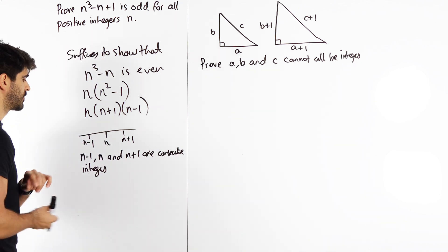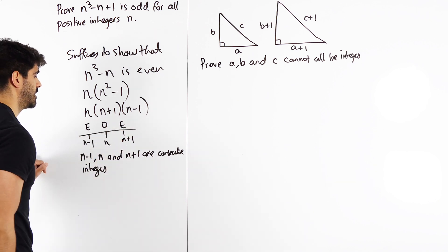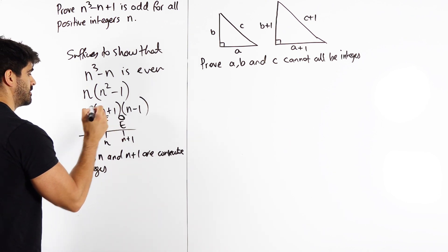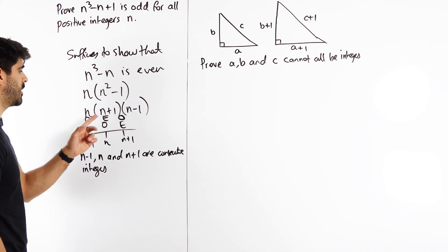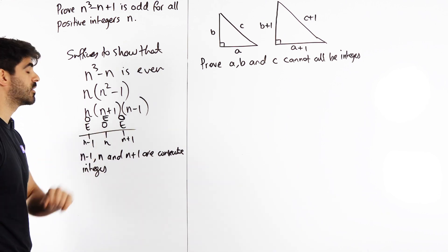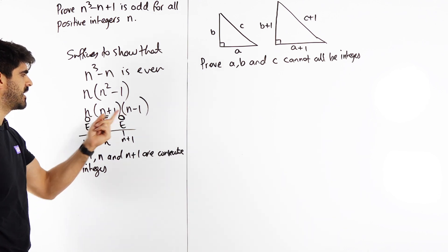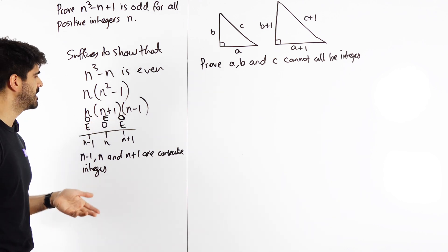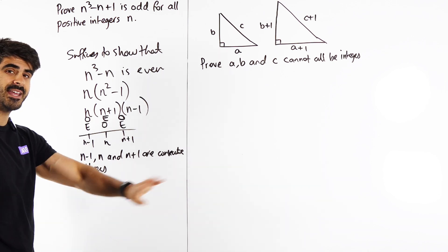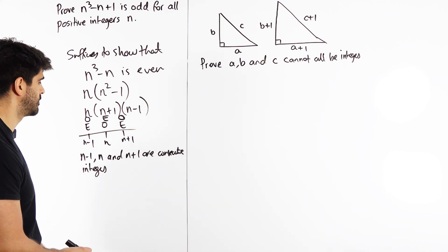For example, if this is even, then it will go odd, then even. But if this one was odd, this would be even, and that would be odd. In both situations, at least one of the values has to be even. Well, what does that mean? If one of these values is even, it must mean that the whole number is even. Even times anything is even. As long as you have one number that's even, you're all good.